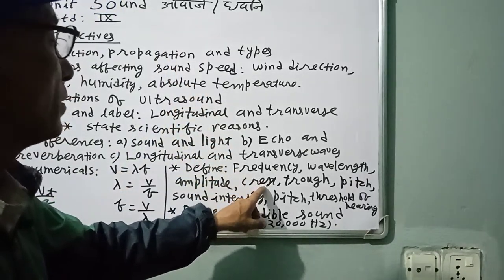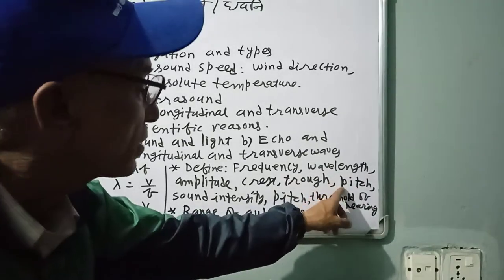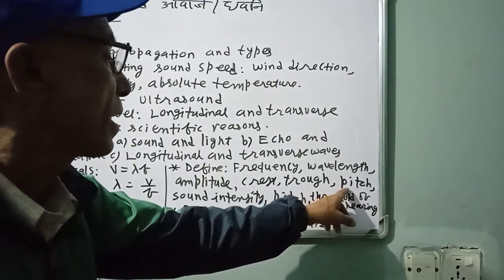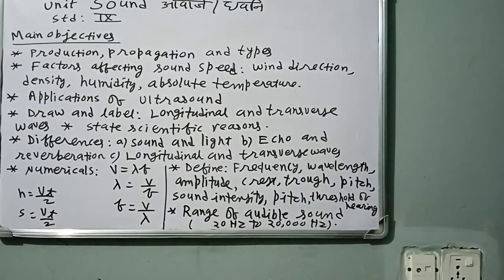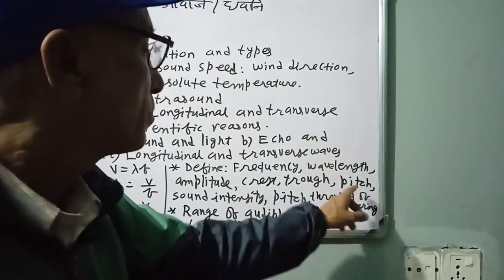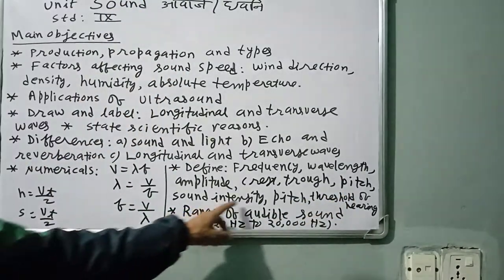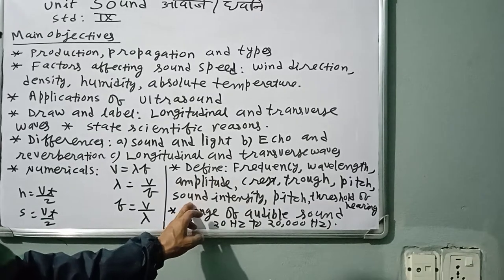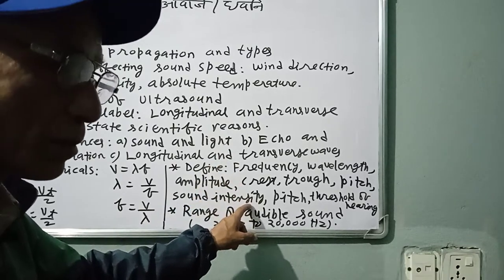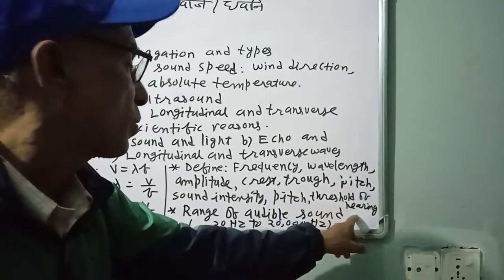In a transverse wave, crest is the highest point and trough is the lowest point. Pitch refers to the shrillness or flatness of sound — high pitch, medium pitch, and low pitch; sometimes extra high is also included. Sound intensity is the rate of flow of energy per second per unit area (per square meter).